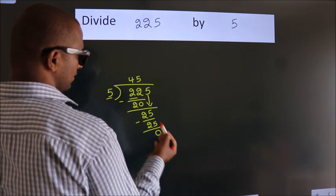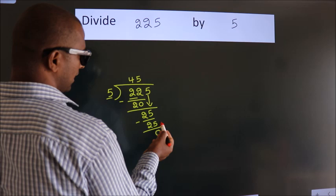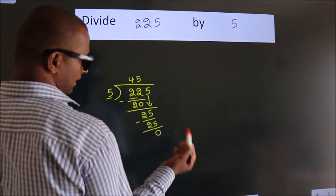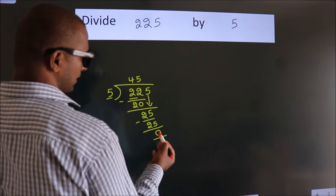After this, no more numbers to bring down. And we got remainder 0. So this is our quotient.